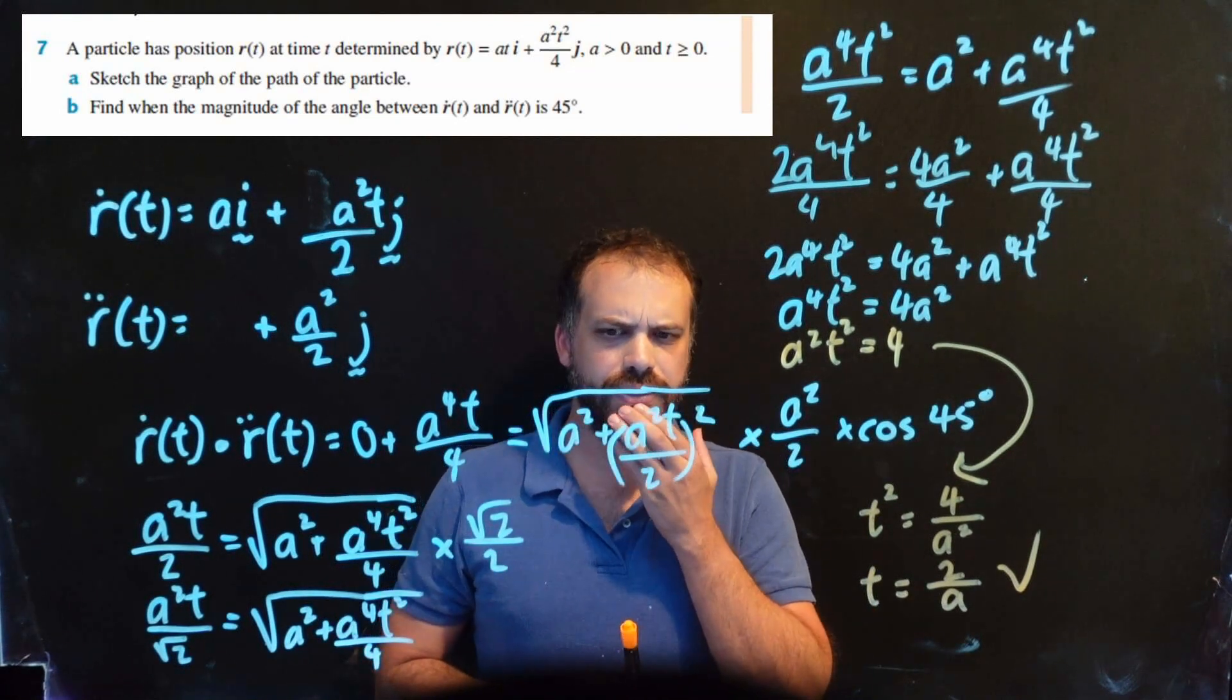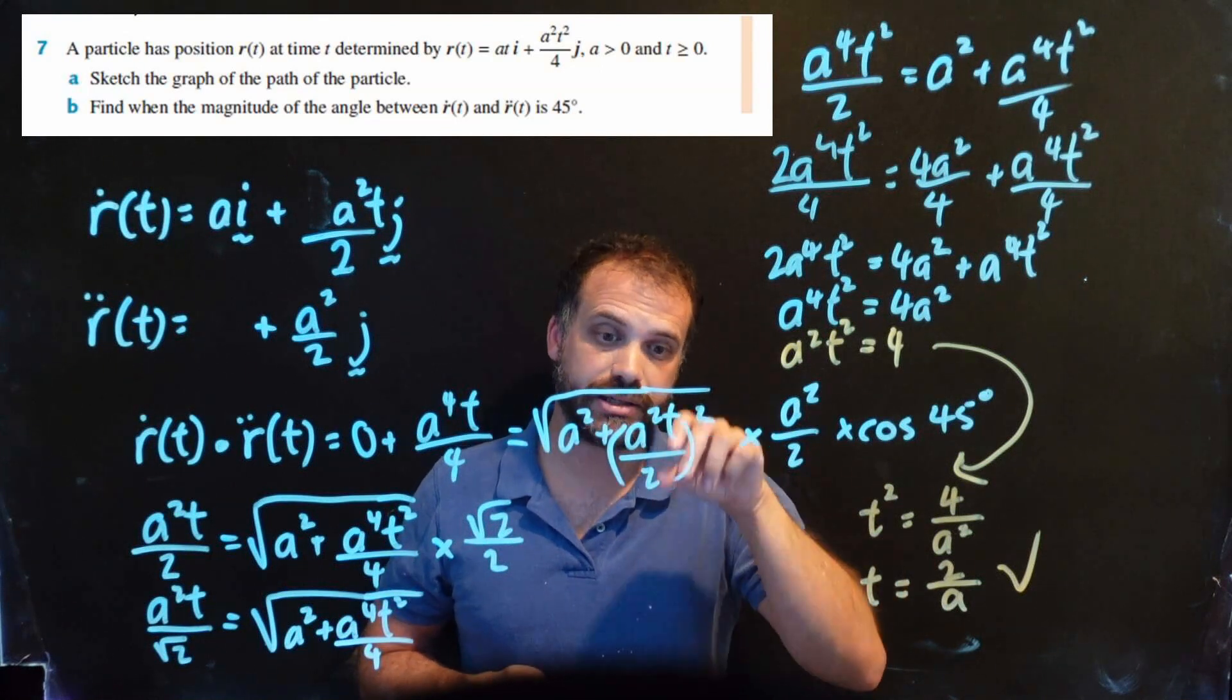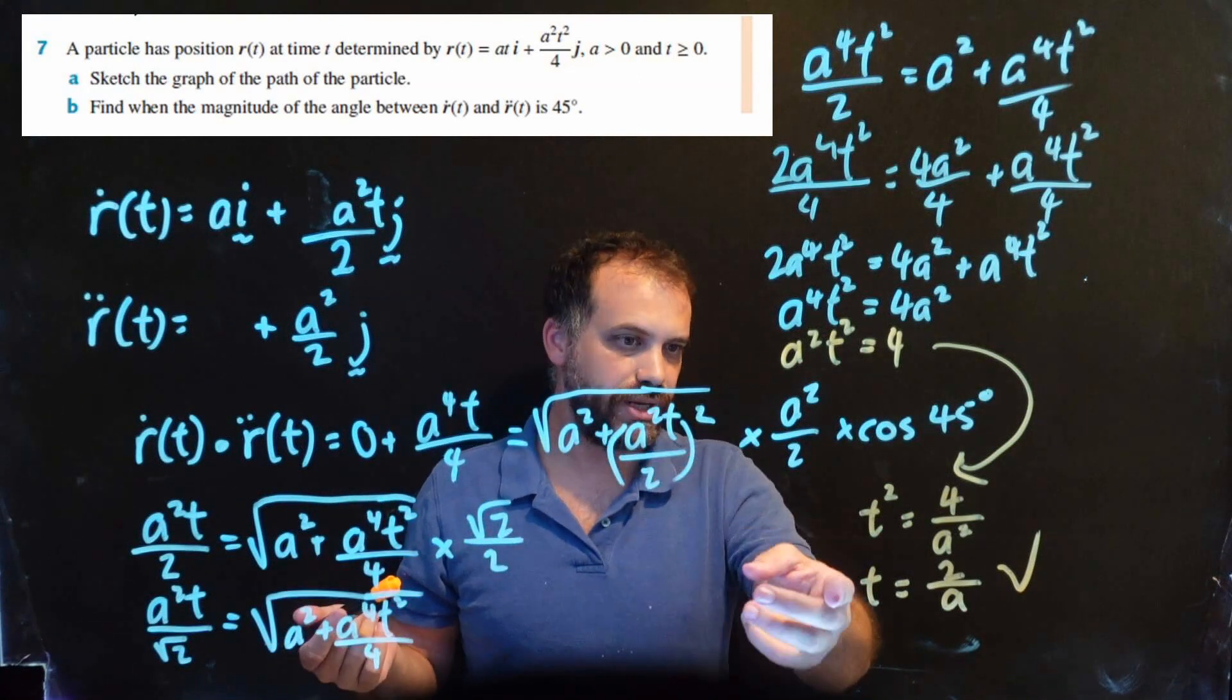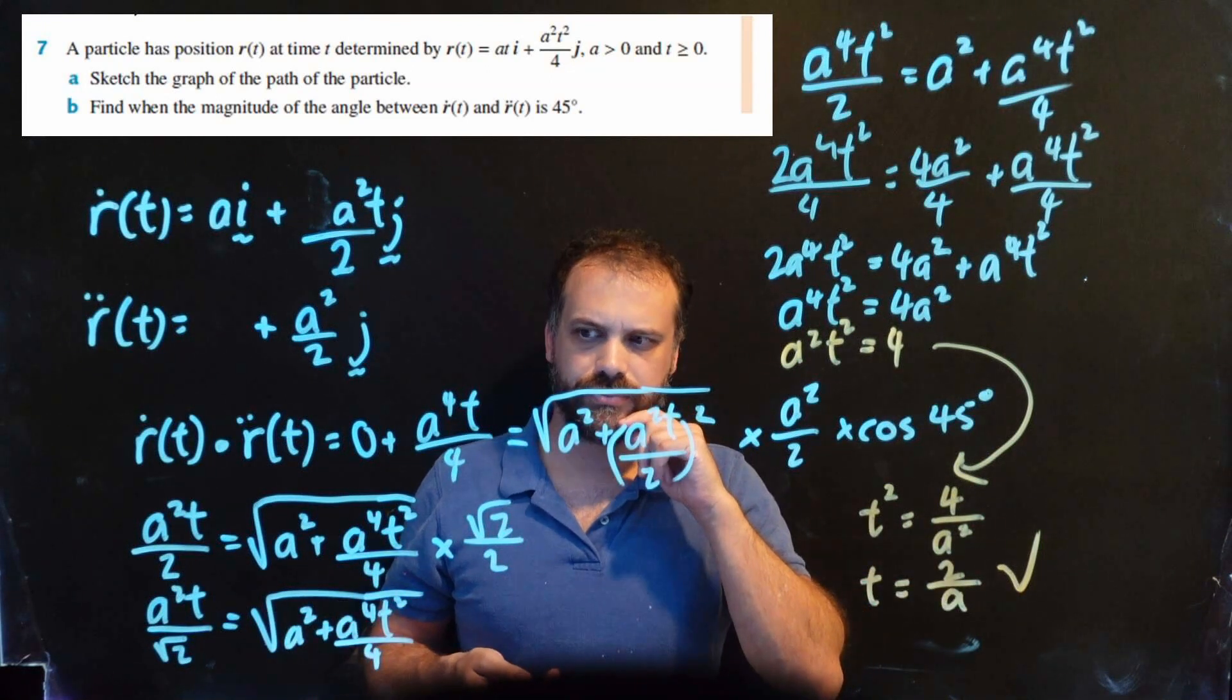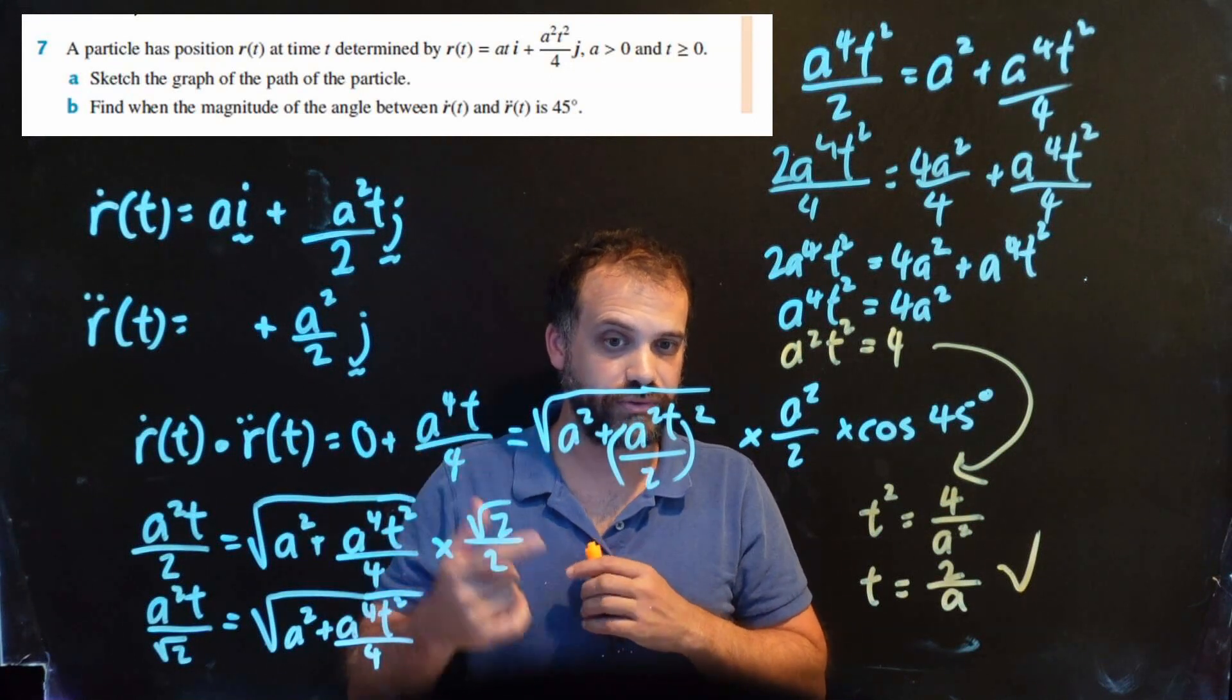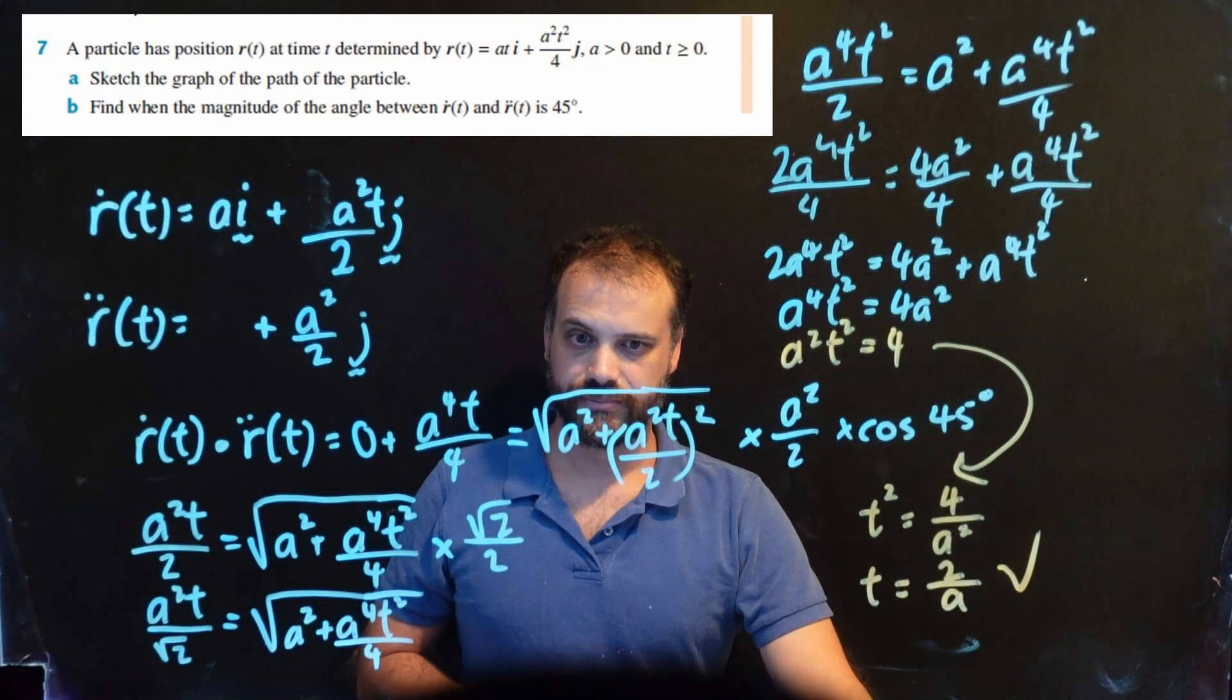Now, you might be looking at square roots and thinking about pluses and minuses and things like that. And I've also square root here, and you might be thinking about pluses and minuses as well. You can have a little think about what's going on there, but it's because t is always greater than or equal to 0. So we're never going to have, this is never going to be negative, because t is always greater than 0. And a is always greater than 0 as well. I like that. That's the answer. The answer is, when is the magnitude of the angle 45 degrees? It's when time is equal to 2 over a, whatever a happens. That's a good one.